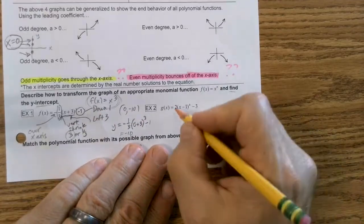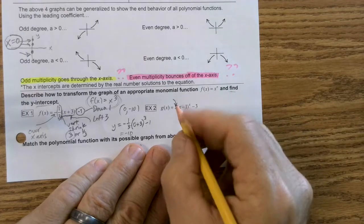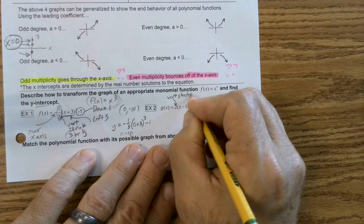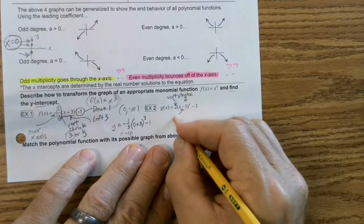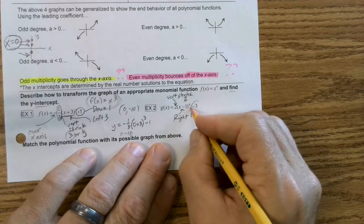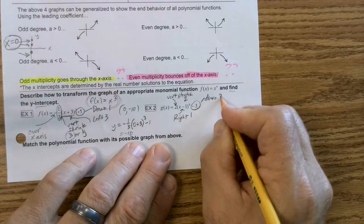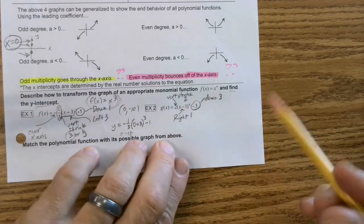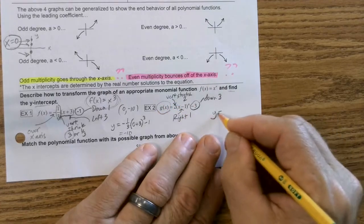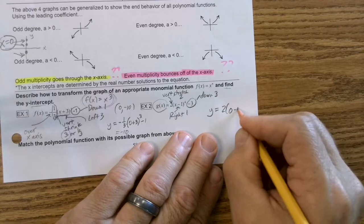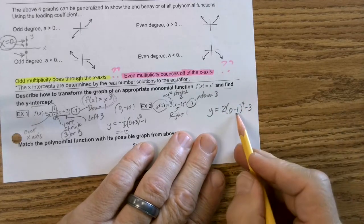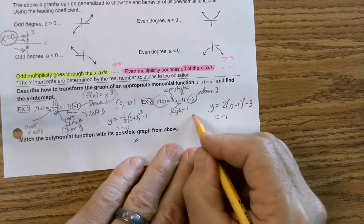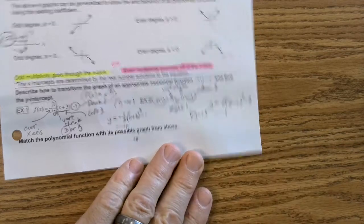Let's do the same thing for this guy. What does that 2 do? There's no negative, so there's no reflection over the x-axis, but that's a vertical stretch factor of 2. This moves it to the right 1, and that negative 3 moves it down 3. Those are the rules of graphing. Now, to find the y-intercept, I just put 0 in for x. So y equals 2 times 0 minus 1 to the 4th minus 3. Negative 1 to the 4th is just 1. 1 times 2 is 2. 2 minus 3 is negative 1. So my y-intercept would be 0, negative 1.